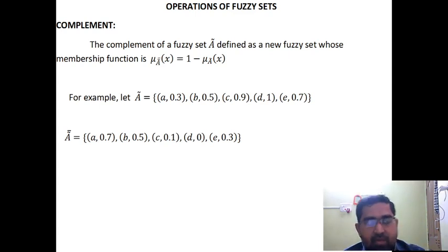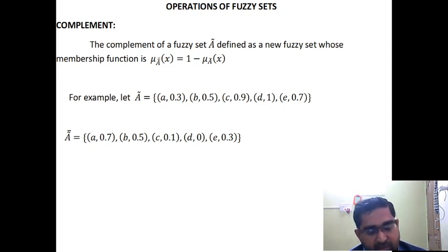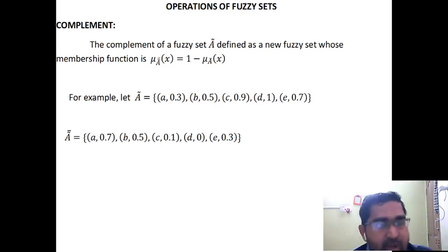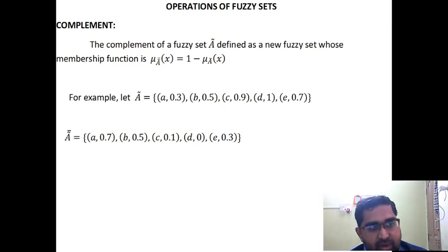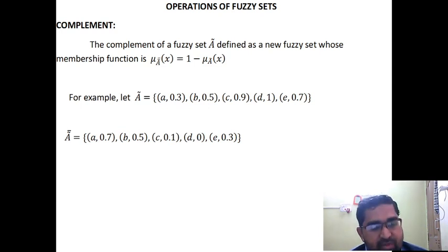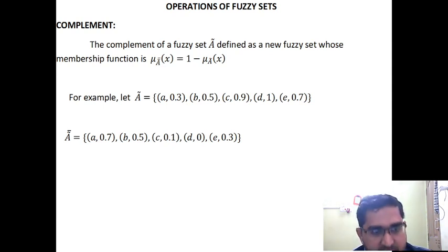Let us recall what we have discussed in this class. First, we differentiated the difference between Crisp Set and Fuzzy Set and the advantages. Then we discussed basic terminologies: Support of Fuzzy Set, Alpha Cut, Strong Alpha Cut, Height of Fuzzy Set, Normal and Subnormal Fuzzy Sets. Then some operations: Union, Intersection, and Complement of Fuzzy Sets. I hope this class will be very useful to you. We will discuss more in the next class. Thank you.